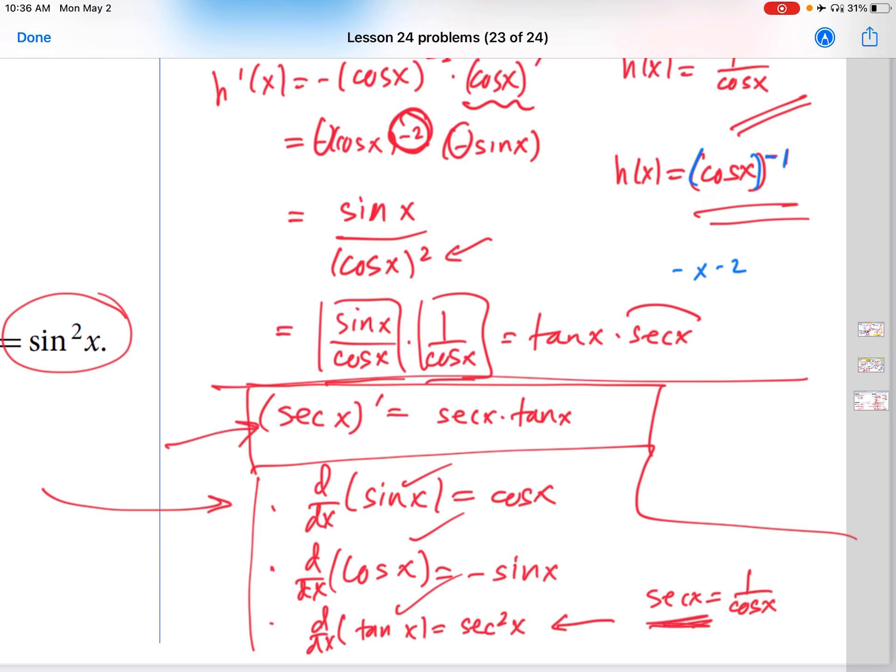You could apply a very similar process to derive the rule for the derivative of cosecant x. That's 1 over sine x. And you can use this little approach that I advocate here. And then certainly you could find the derivative of cotangent of x. That's 1 over tangent x.